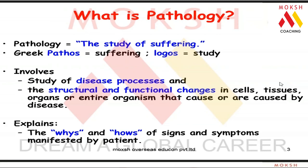Most of medicine has been written in Greek and Latin, originating from Alexander the Great who captured nearly 70 percent of the world. Greece was the originator of medicine including pathology, and his language spread as Greek and Latin. Breaking the word 'pathology' down: in Greek, 'pathos' means suffering and 'logos' means study — so pathology literally means study of suffering.